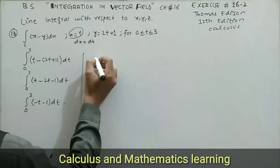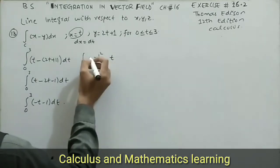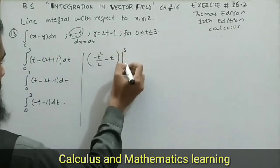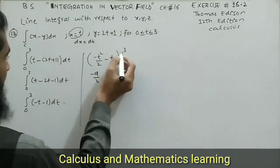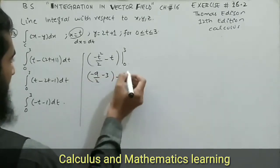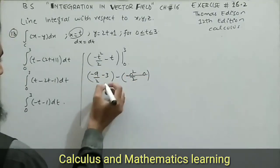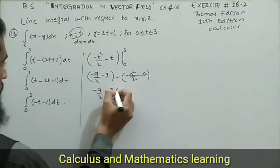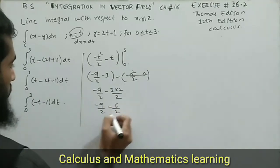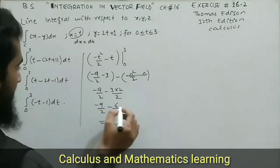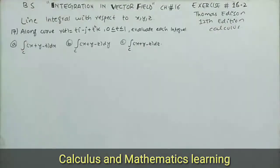Integrating: the integral of negative t is negative t²/2, and the integral of negative 1 is negative t. Applying limits from 0 to 3: putting t=3 gives negative 9/2 minus 3; putting t=0 gives 0. So the result is negative 9/2 minus 3, which equals negative 9/2 minus 6/2, giving negative 15/2. This is the required answer.